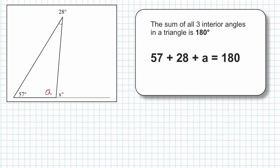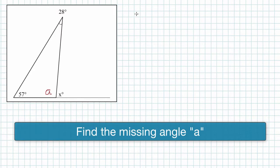In this case, 57, 28, and A should add up to 180. So let's solve for A. I'm going to set the problem up now.